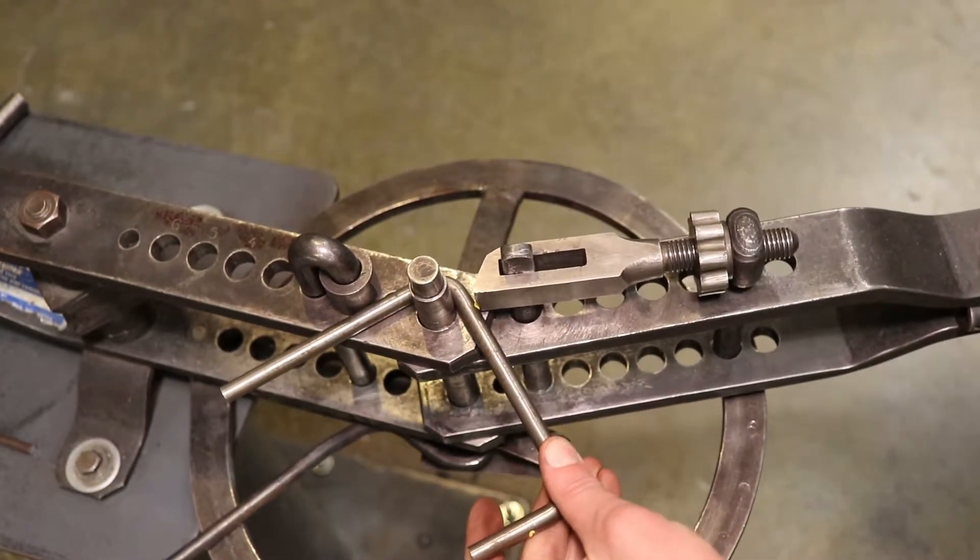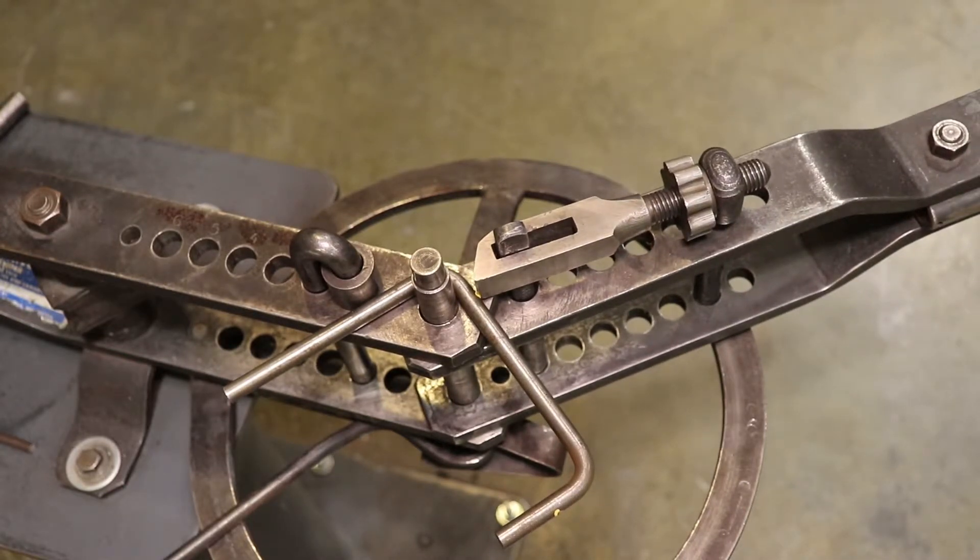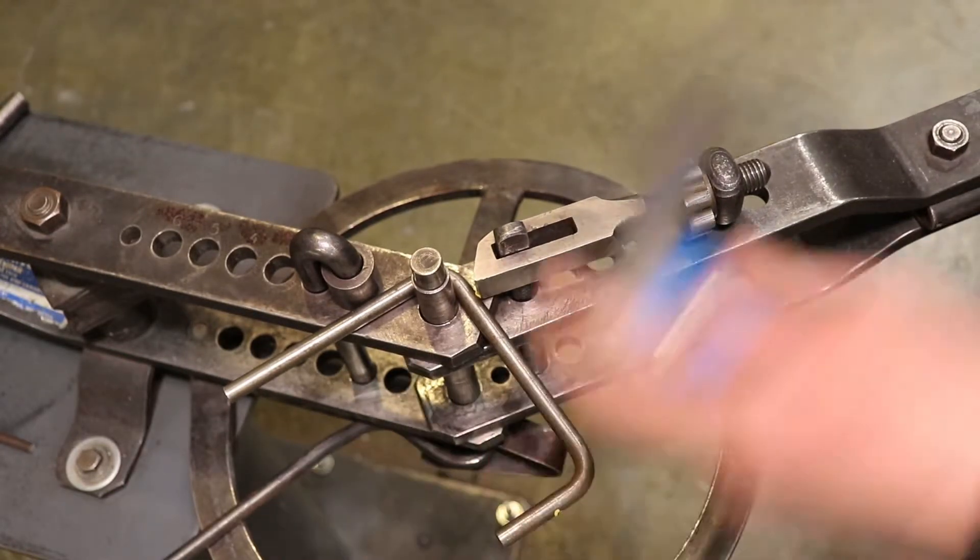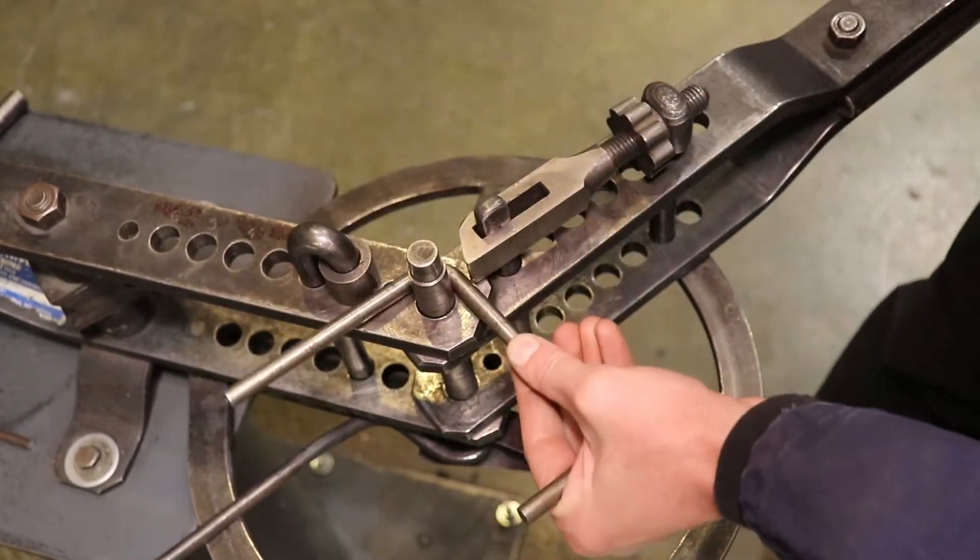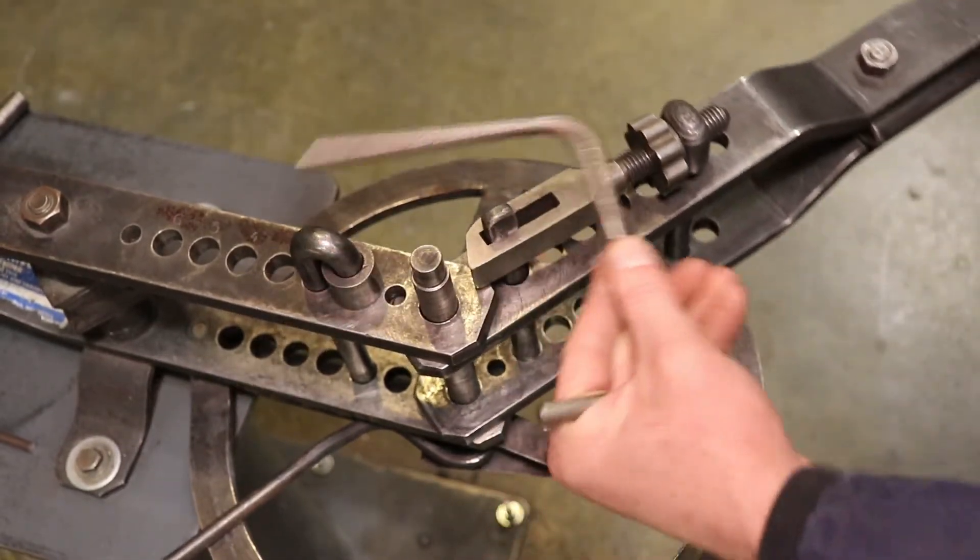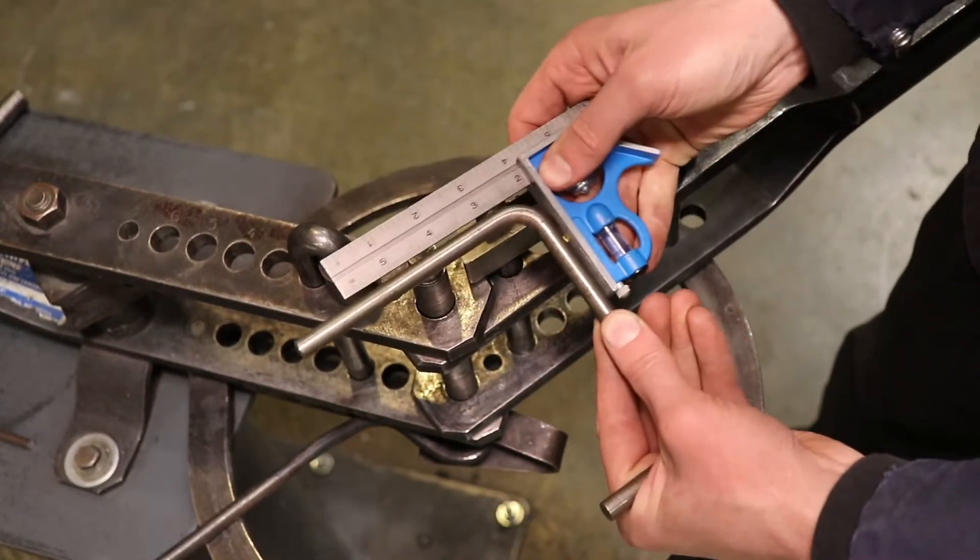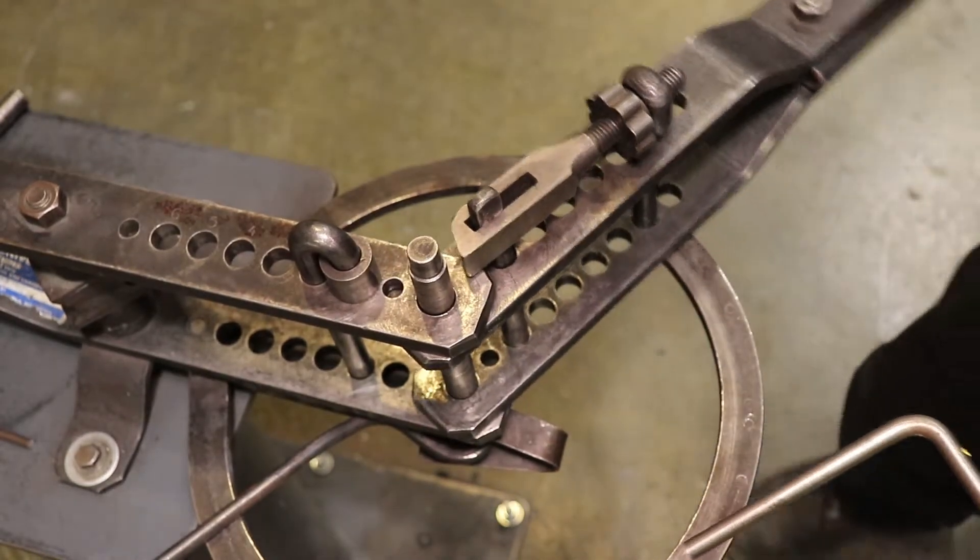I'm going to pull that bend when I'm satisfied with how it's sitting in there, and we'll check it again to make sure it's nice and 90, so I've got my combo square handy again, and it looks like it needs a little bit more bending. Give it another little touch with the handle. And there you go. We have a nice 90 degree part.